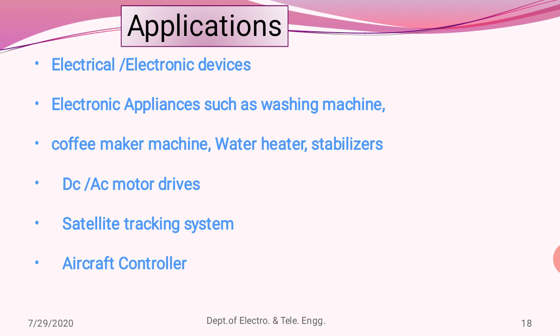Finally, the basic applications of a control system can be dealt with in electrical or electronic devices such as switches, MCBs, controllers, and PLCs. Electronic applications include washing machines, coffee makers, water heaters, and stabilizers. A major application is in motor drives such as DC or AC motor drives. Control systems are also used in satellite tracking systems and aircraft controllers.